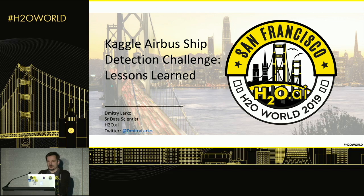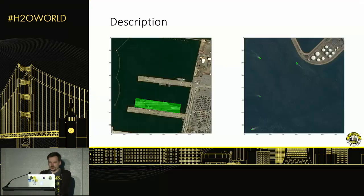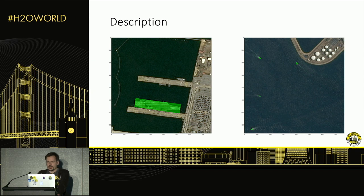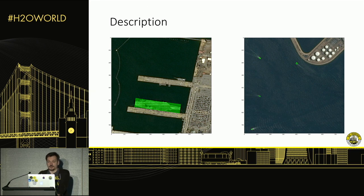It was an Airbus ship detection competition. If you go to the description of the data, it was fairly simple. You've been asked to find and identify ships on satellite images. Basically, it's a segmentation problem. Your model actually needs to associate each pixel on a picture with a specific class — in our case, background (no ship) or foreground (a ship).